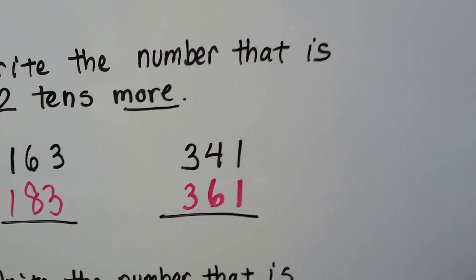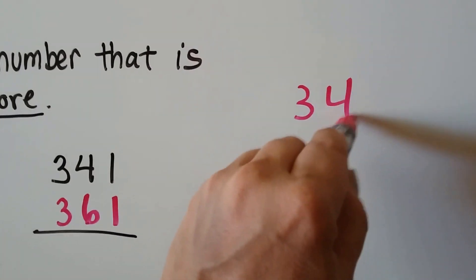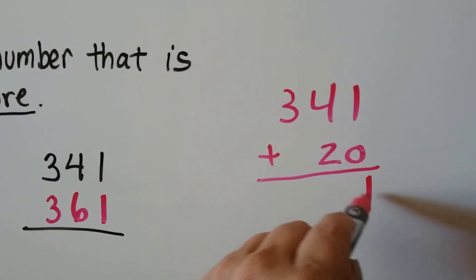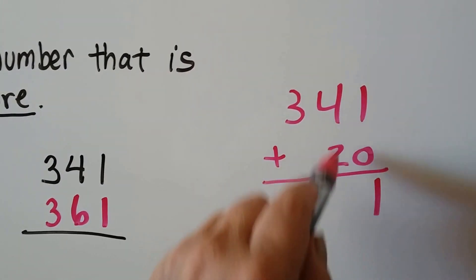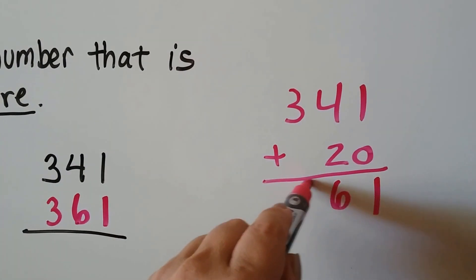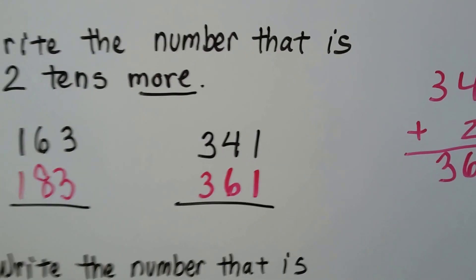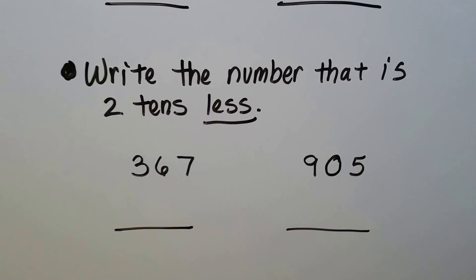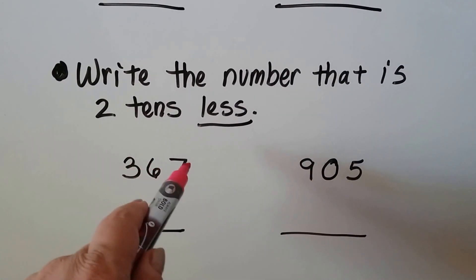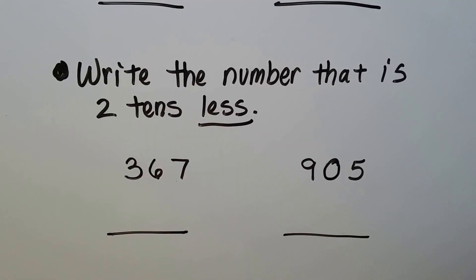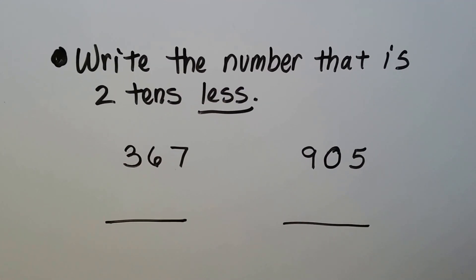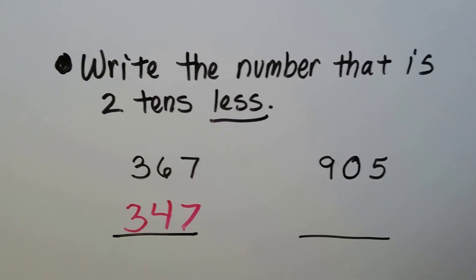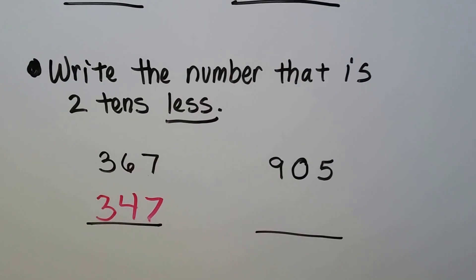We're adding two tens — just adding 20. Since 20 has a zero in the ones place, the ones stay the same. We add two to the tens place, giving us a six, and bring down the three, so 341 plus 20 equals 361. We're doing that in our head by adding two more tens. Now for two tens less: we have 367, and two less than six in the tens place is four, giving us 347.